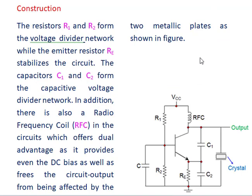We will now discuss the construction of the crystal oscillator. The crystal oscillator also consists of a tank circuit, an amplifier network, and a feedback network. In the tank circuit, it consists of two capacitors C1 and C2. The crystal is the main part of the tank circuit, and the other part is the amplifier.